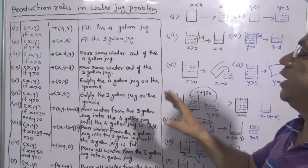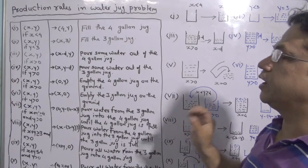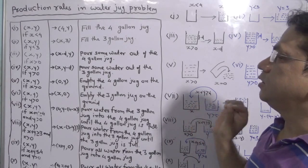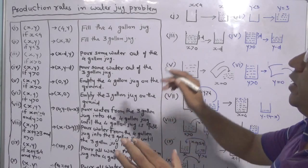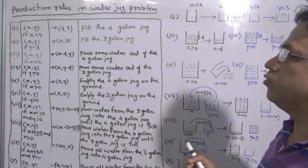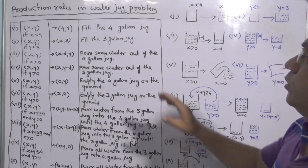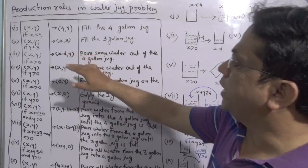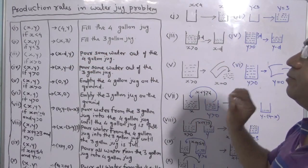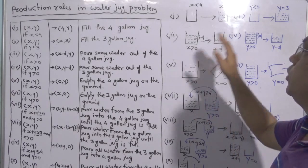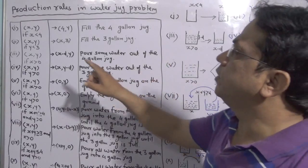These are the production rules that I have written for the water jug problem. As I mentioned, X is the 4-gallon jug and Y is the 3-gallon jug. Production rules are a set of rules defined in an artificial intelligence program. I have written each production rule here and correspondingly shown it with a diagram, so you will understand specifically and precisely what is happening in each production rule.